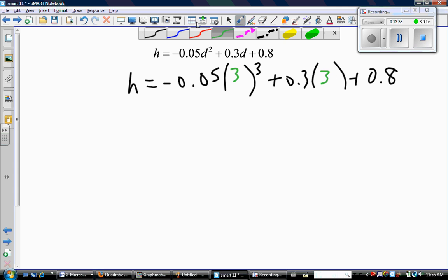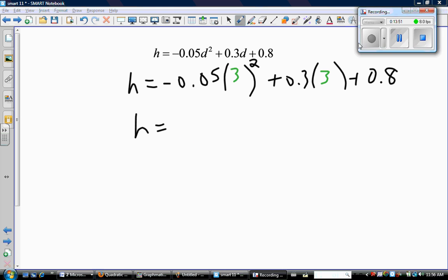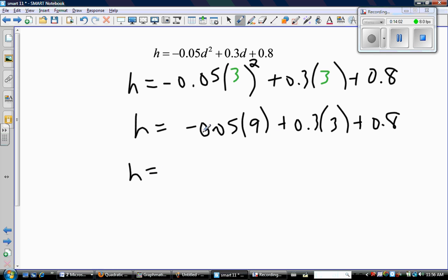So now do this math in your calculator. So I'm going to first of all do that exponent. Three times three is nine. Then I'm going to do those two little pieces of multiplication. Negative 0.05 times nine is negative 0.45 plus 0.9 plus 0.8. So this gives me a maximum height of 1.25.